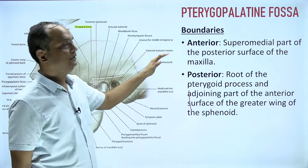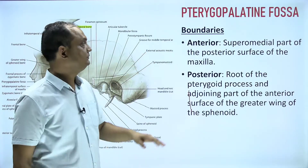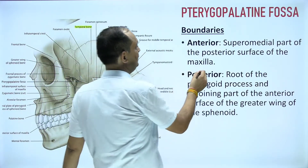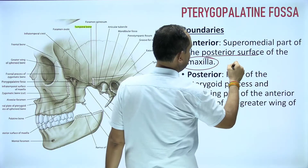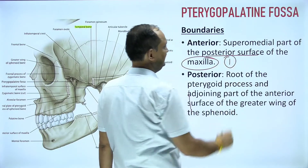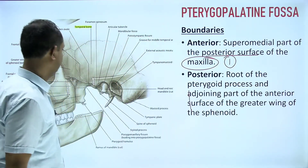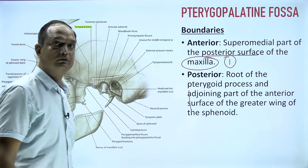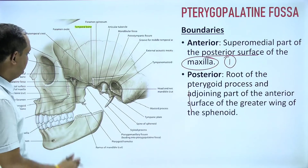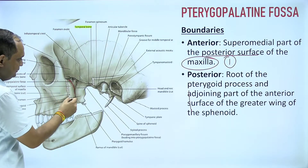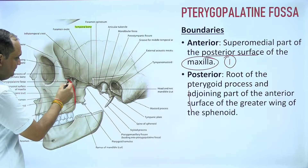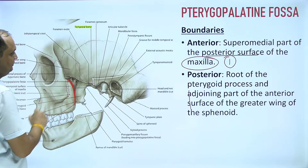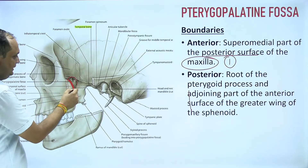The anterior boundary is formed by the superomedial part of the posterior surface of the maxilla. Behind the posterior surface of the maxilla, you have a hidden area, and this hidden area is the pterygopalatine fossa.